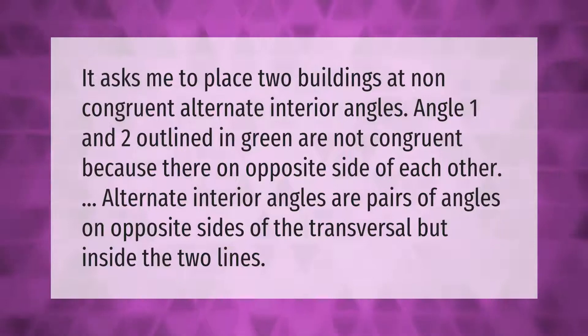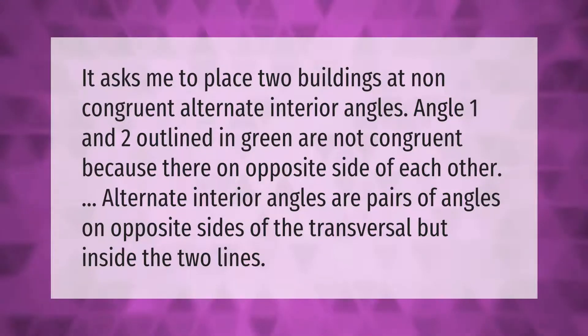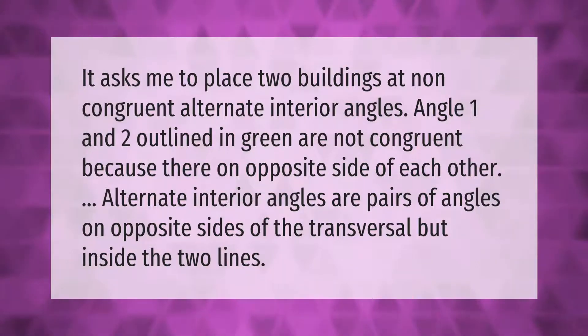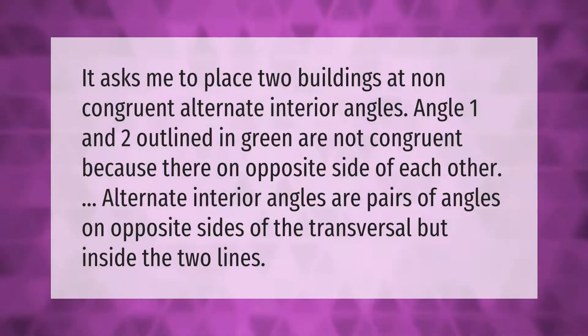It asks me to place two buildings at non-congruent alternate interior angles. Angle one and two, outlined in green, are not congruent because they're on opposite sides of each other.